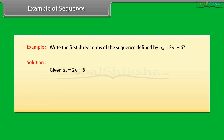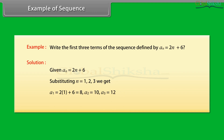Example of sequence: Write the first 3 terms of the sequence defined by a(n) = 2n + 6. Solution: Given a(n) = 2n + 6. Substituting n = 1, 2, 3, we get: A1 = 2(1) + 6 = 8; A2 = 10; A3 = 12. Therefore, the required terms are 8, 10, and 12.